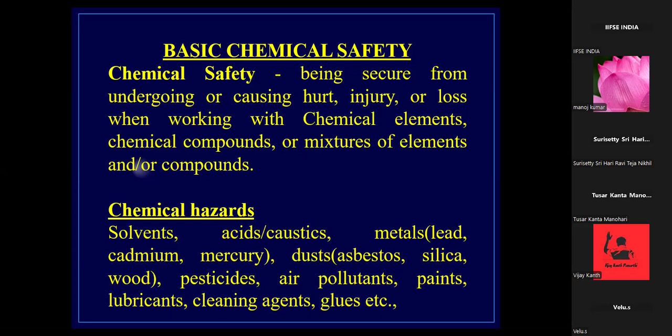The chemical hazards related to the workplace mainly involve solvents, acids, and metals. For example, heavy metals such as lead, cadmium, and mercury. Apart from that, dust such as asbestos, silica, and wood; pesticides; air pollutants; paints; lubricants and cleaning agents; and glues. Any chemical that has the ability to cause harm can be classified under hazardous chemicals.